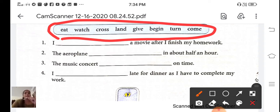In the future tense, we must use will. The aeroplane will land in about half an hour. So which word is suitable for this sentence students? Eat, no. Cross, no. Land. Yes, the aeroplane will land in about half an hour.